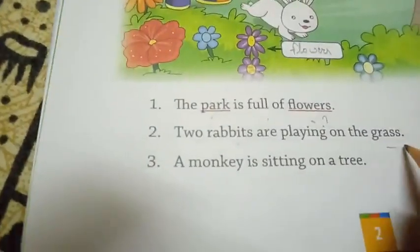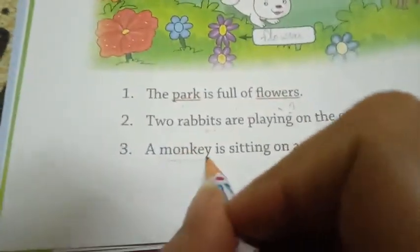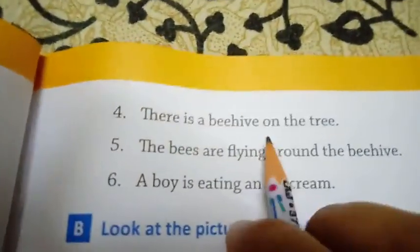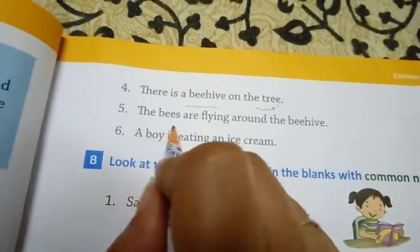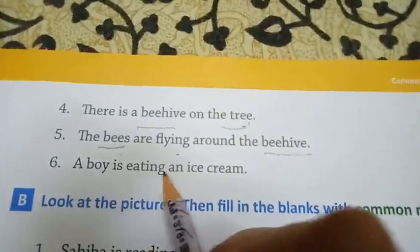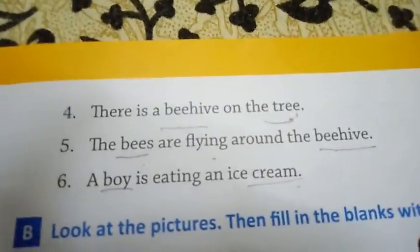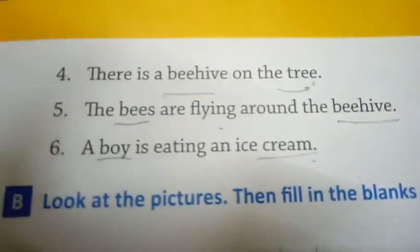The park is full of flowers — 'park' and 'flowers' are common nouns. Two rabbits are playing on the grass — 'rabbits' and 'grass' are common nouns. A monkey is sitting on a tree — 'monkey' and 'tree' are common nouns. There is a beehive on the tree — 'beehive' and 'tree' are common nouns. The bees are flying around the beehive — 'bees' and 'beehive' are common nouns. A boy is eating an ice cream — 'boy' and 'ice cream' are common nouns.